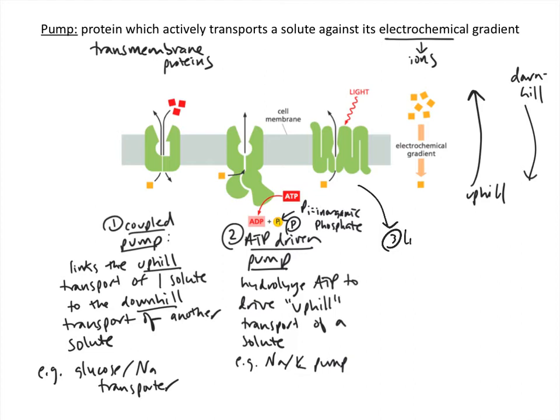Last but not least, there's the third type of pump, and this is a light-driven pump. You can see on the diagram here we've got this multi-pass transmembrane protein, and light is striking that protein. It will have some sort of special chemical feature that's responsive to light, and then that can drive a conformational change which moves the solute outside in this case, or at any rate, it moves the solute uphill.